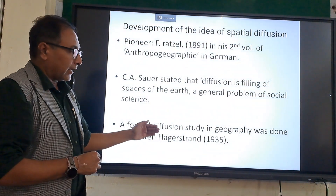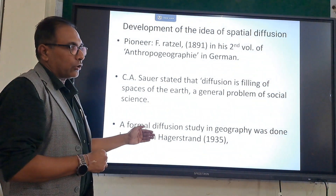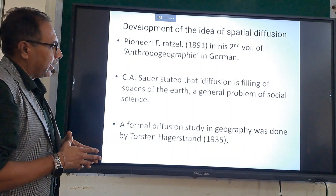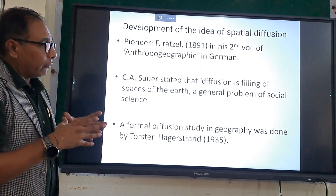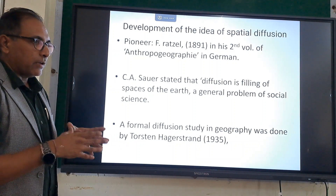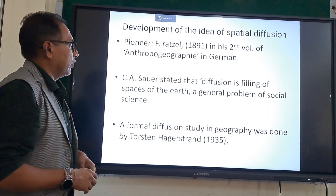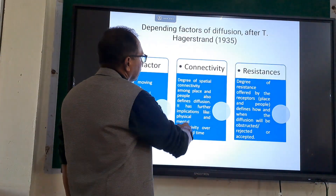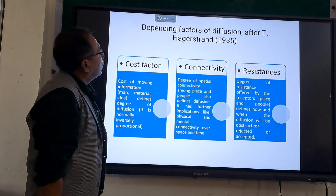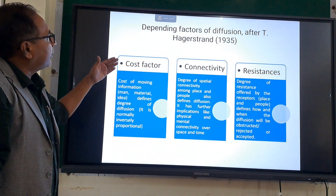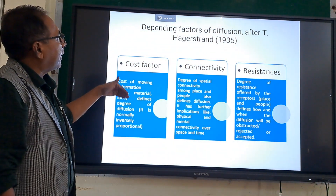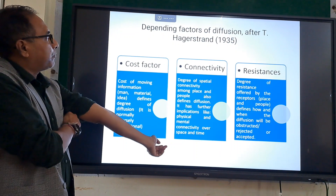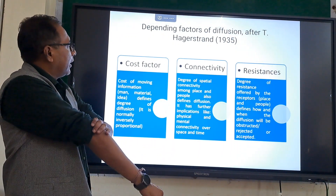A formal diffusion study in geography was done by Thorsten Hagerstrand in 1935, who is regarded as the father of the model in general. Hagerstrand is the pioneer who established diffusion as a model in geography. These are the various determining factors of diffusion which were identified by Hagerstrand himself.